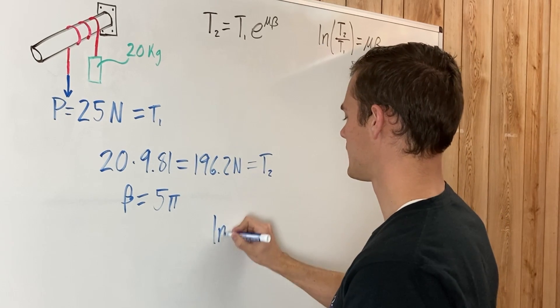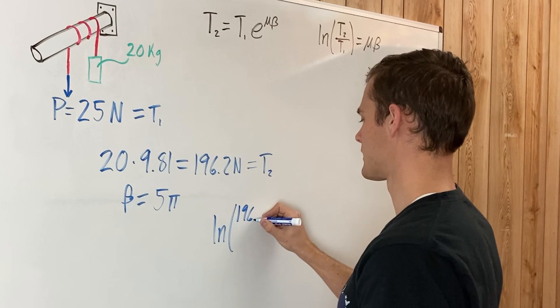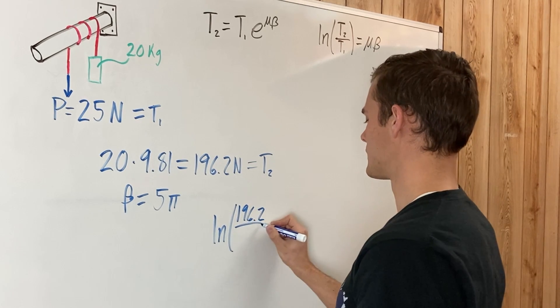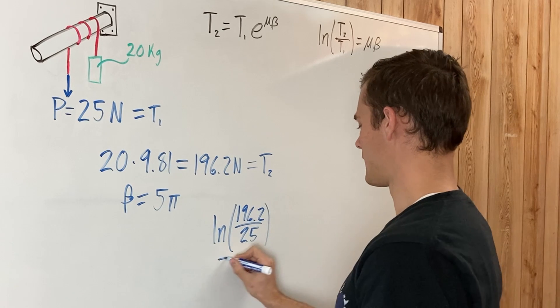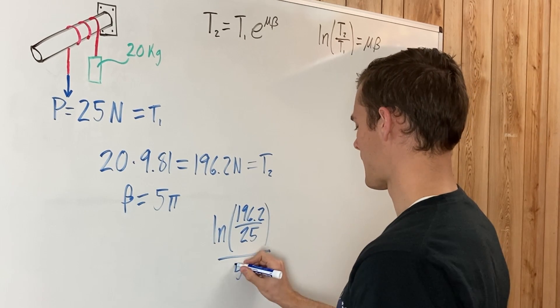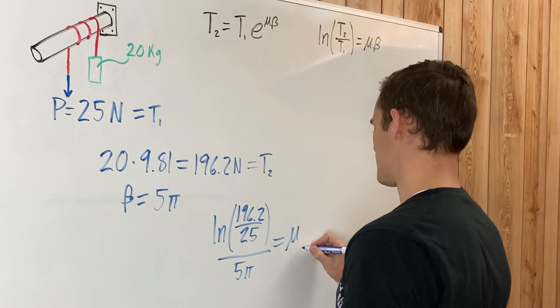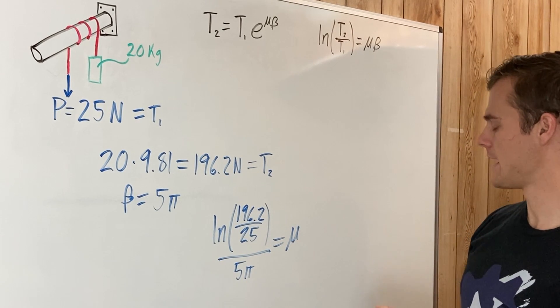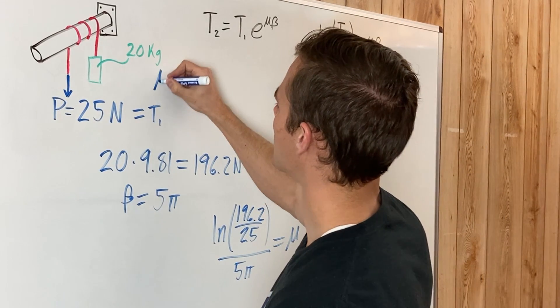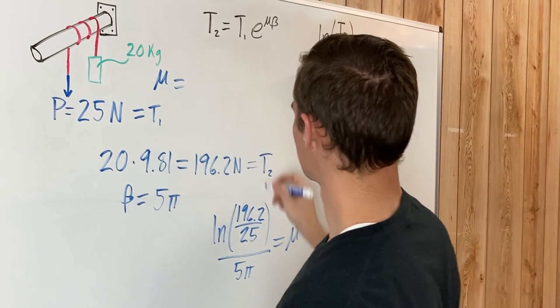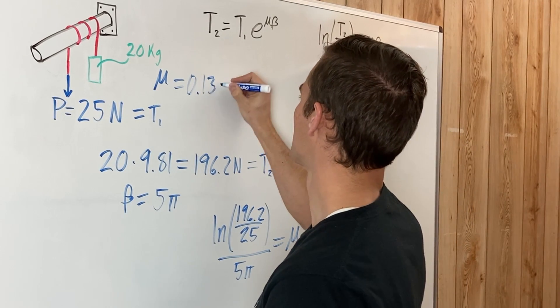we have the ln of T2 divided by T1, which is 196.2 divided by 25, and all that divided by beta, which is 5 pi, equals mu, the coefficient of static friction. And solving that out, we are just going to label that up here. Plugging this into your calculator, you get that mu is 0.131.